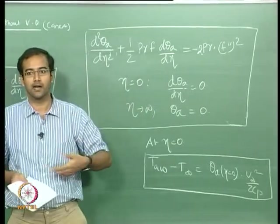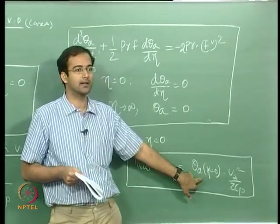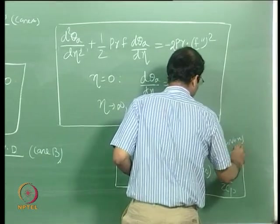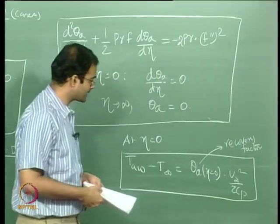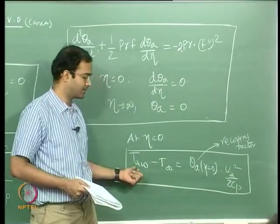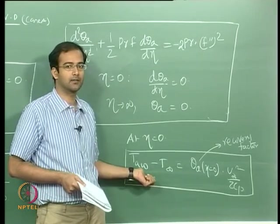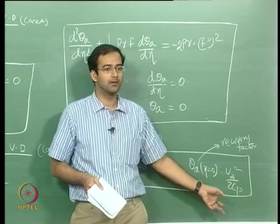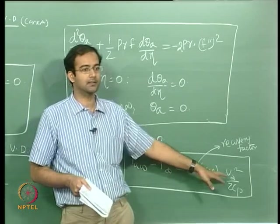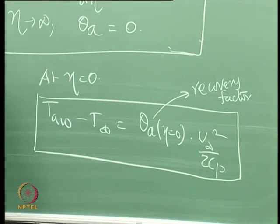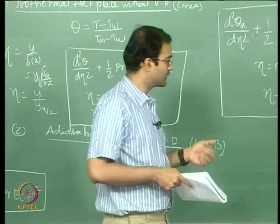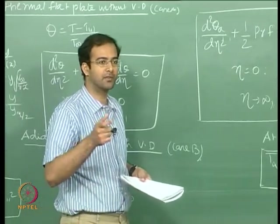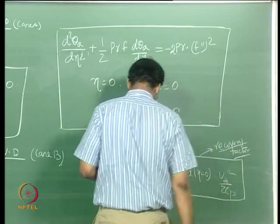The value of θ_a at η = 0 is obtained from the shooting-method guess. This factor θ_a(0) is also called the recovery factor, as it is a non-dimensional temperature relating the dynamic head to the adiabatic wall temperature. The stagnation temperature is T_∞ + U_∞²/(2C_P), but the adiabatic wall temperature is T_∞ plus some recovery factor times U_∞²/(2C_P), where the recovery factor is less than 1.